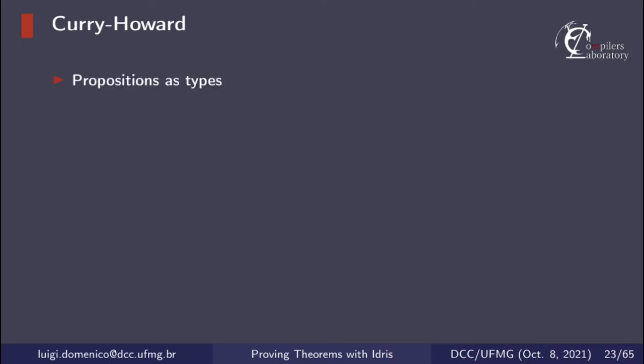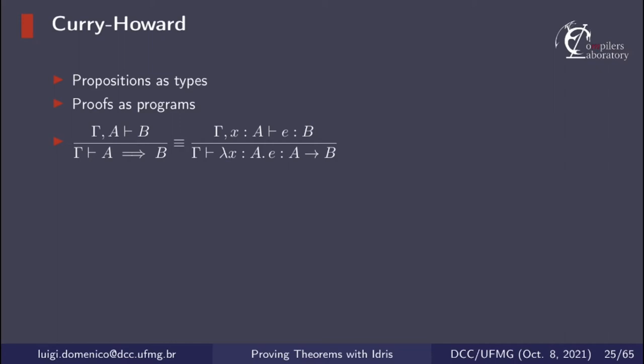Before I show how we implement this in Idris, let me talk about the Curry-Howard correspondence, which is basically the theory behind proofs in Idris. The Curry-Howard correspondence says that there is a correspondence between propositions and types, and proofs and programs. So if we want to prove that A implies B given a context gamma, we assume A and prove B. What the Curry-Howard correspondence says is that this is equivalent to having a function from A to B and constructing an expression or term of type B. The proposition is the type of the function, and the proof is constructed by producing something of type B.